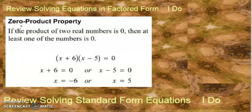Let's review the zero product property. If the product of two real numbers is zero, then at least one of the numbers is zero. So we set the factors equal to zero separately to get our two solutions, our two zeros.